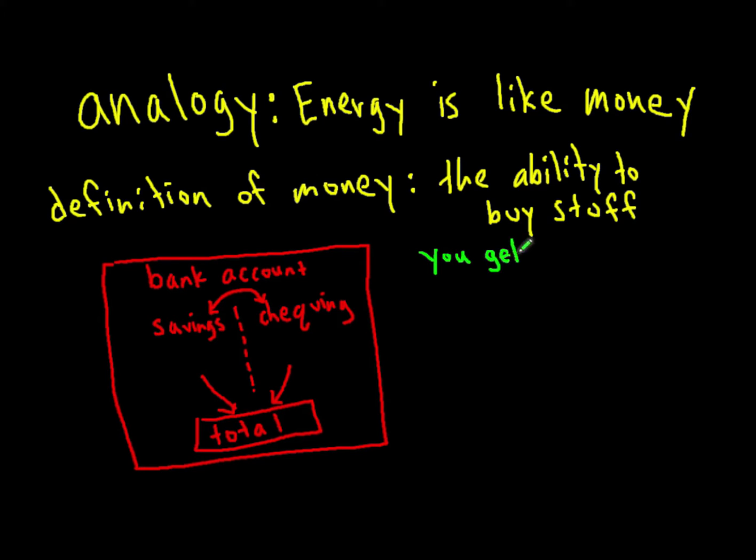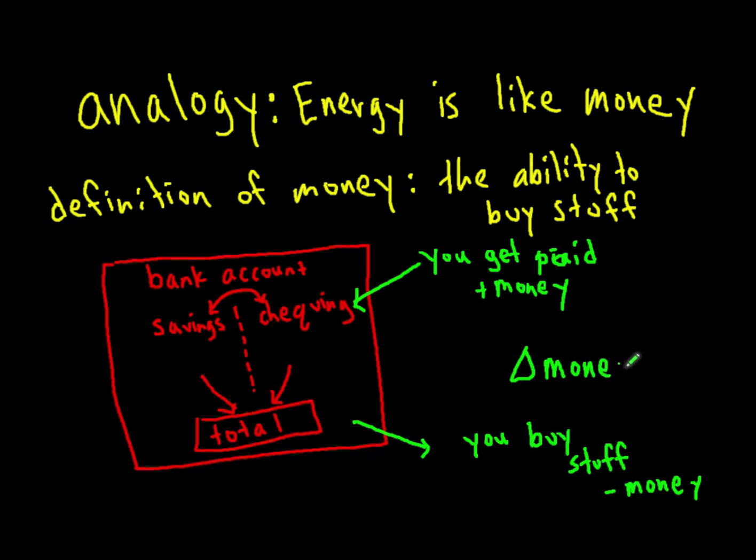Now, sometimes you get paid, and that's how money enters your bank account. In this case, we would call it positive money, a gain of money. Sometimes you buy stuff, and money leaves your bank account. This loss of money is negative money. Either way, we have a change of money. Your bank account is not isolated. It's not just sitting there holding your money. You use it to buy stuff, and you get paid. Money enters and money exits. That's the idea of a non-isolated system.